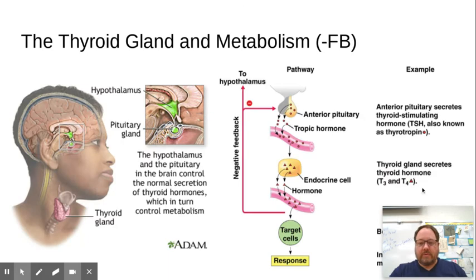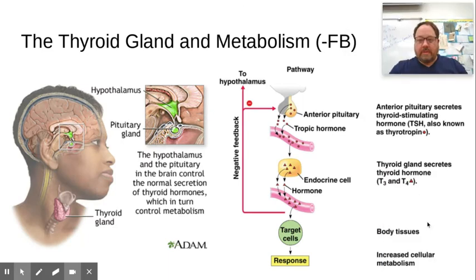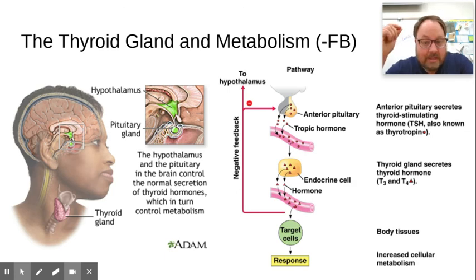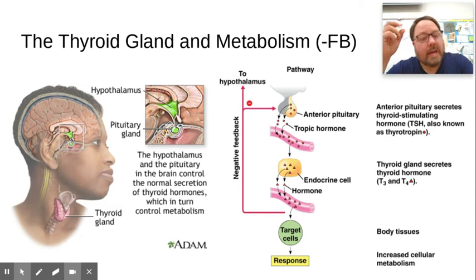A common example involves the thyroid gland as it relates to body temperature and metabolism — a really good example of a negative feedback loop. The hypothalamus, sometimes described as the thermostat in the brain, can detect changes in temperature. If the body starts to become too cool, the hypothalamus detects that and sends a hormone to the pituitary gland.